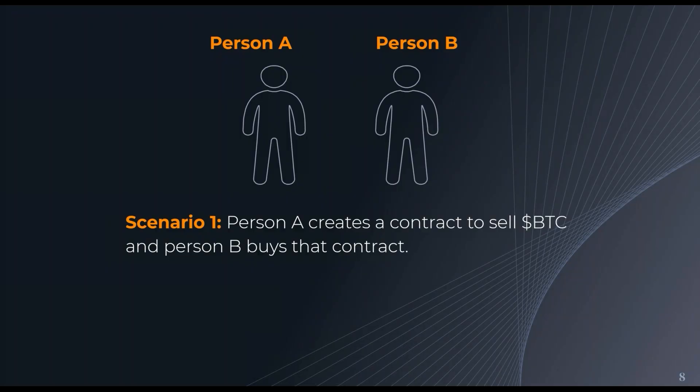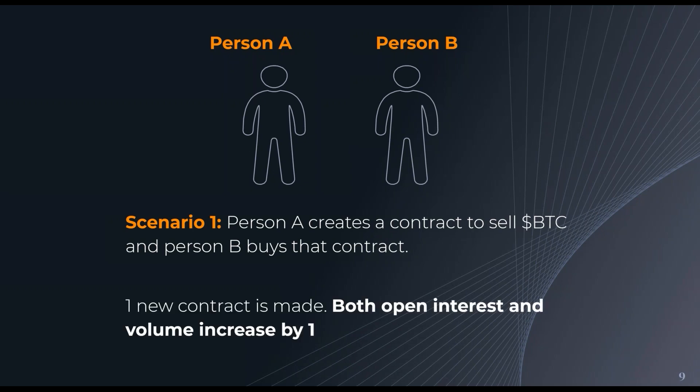It's best represented with an example. Person A creates a contract to sell to person B, and person B decides to buy it. Every contract must have a buyer and a seller. Person A has made a new contract, so one new contract is made. Both open interest and volume increase by one.